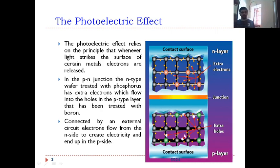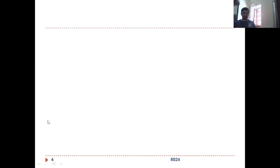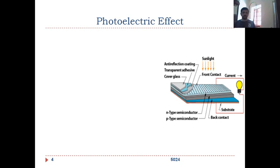This is the simple cross-sectional view of the construction of a photovoltaic cell. There will be an anti-reflection coating and a transparent adhesive and a covering glass to protect the material of the cell. Then there is a photovoltaic cell comprising of n-type semiconductor and p-type semiconductor. At the bottom we have a back contact and a substrate, and the circuit is completed by maintaining the connection between the n and p to the current to the grid or battery or whatever it is.